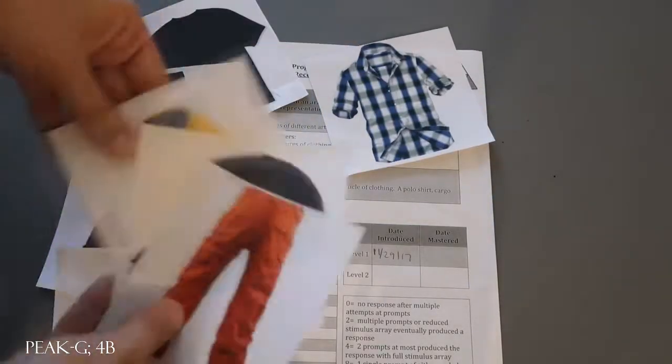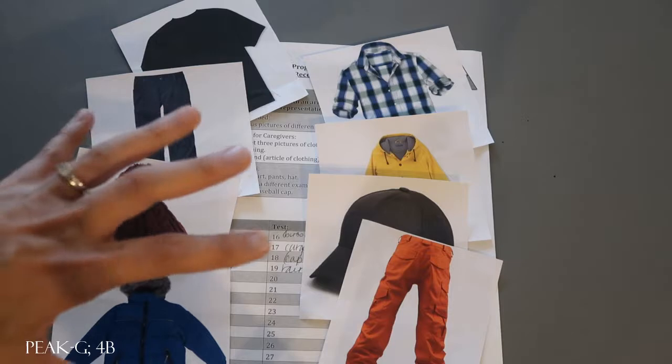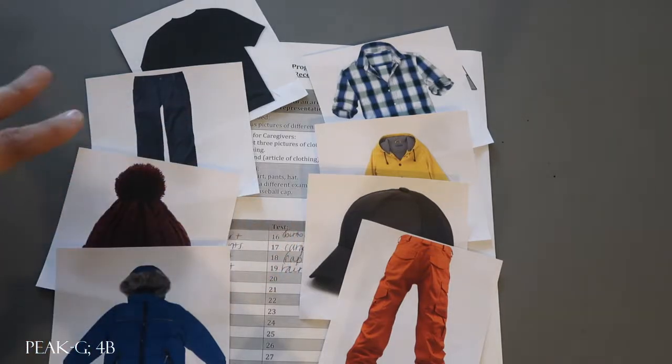And then we did a button up, a raincoat, a cap, and cargo pants for our test stimuli. So they're just a little bit harder in variation than what we have for the train side.